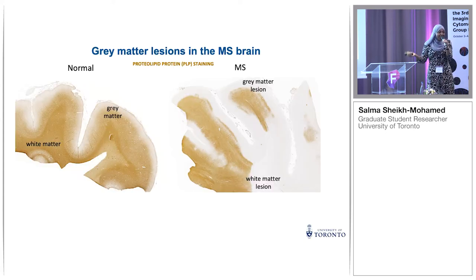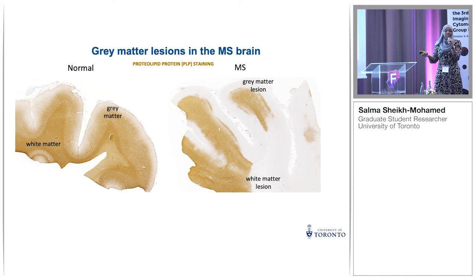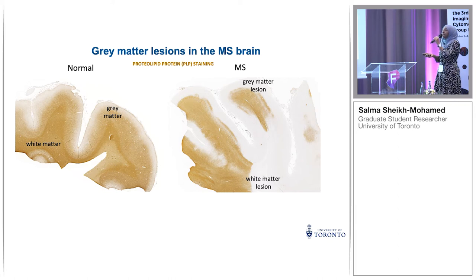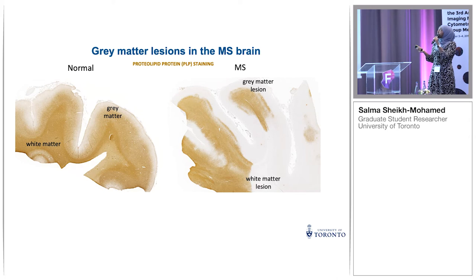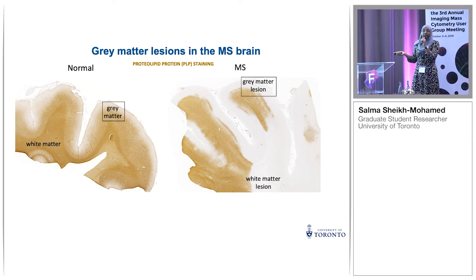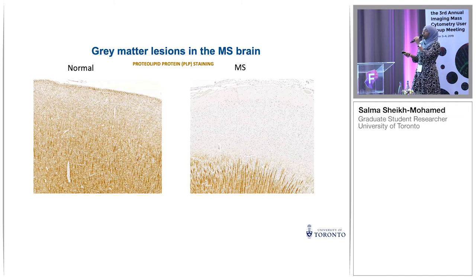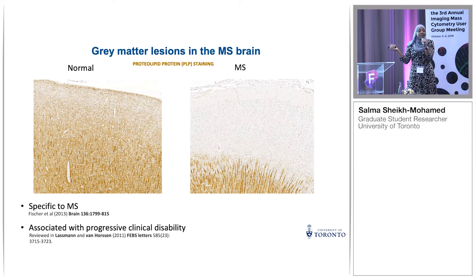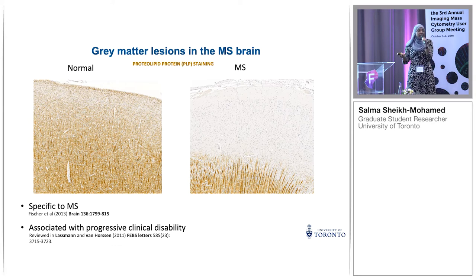We not only see white matter lesions but grey matter lesions as well. Here you're looking at myelin-stained brain tissue — in the normal case, grey matter is a little less myelinated than white matter. But in the MS brain, grey matter is completely missing myelin. This is really important to us because grey matter demyelination is specific to MS — we don't see it in any other neurodegenerative diseases — and it's associated with clinical disability.